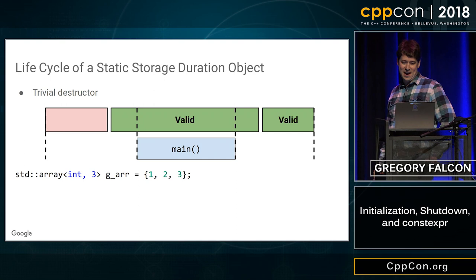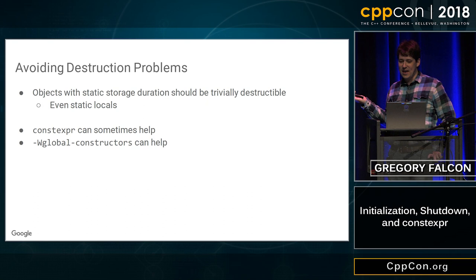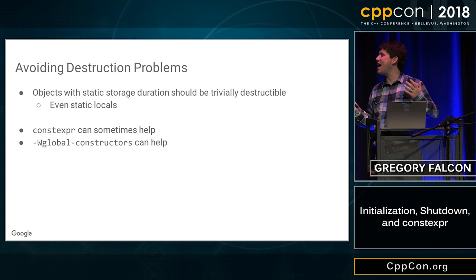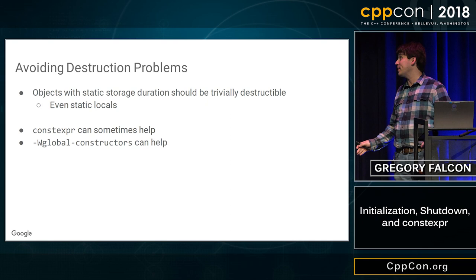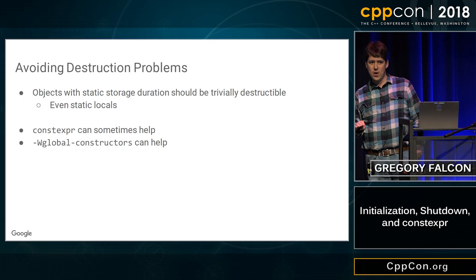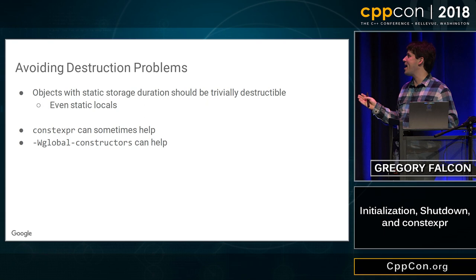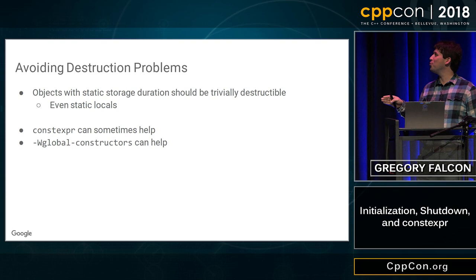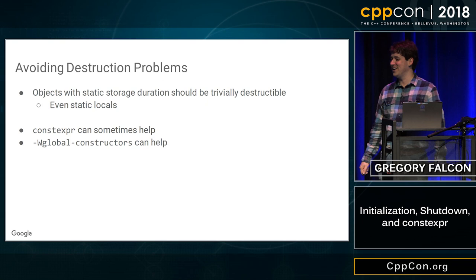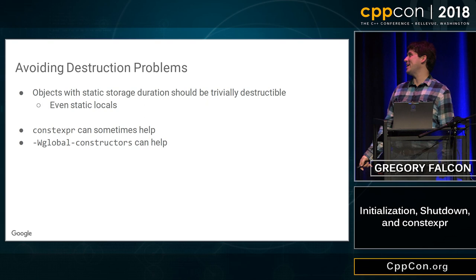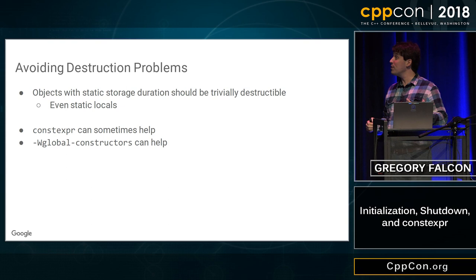So how do you avoid the destruction problems? I really don't have as much nice to say as I did on startup — just don't have global variables that have non-trivial destructors. This is actually a rule in the Google style guide, we just don't allow it at all. Constexpr can help you: if you can declare your object as constexpr, then it's guaranteed to have a trivial destructor — the language just doesn't let you have a non-trivial destructor. I've also learned that C++20 is gaining the concept of a constexpr destructor, which is really cool, but it doesn't help you today. The -Wglobal-constructors flag will also warn about non-trivial destructors.